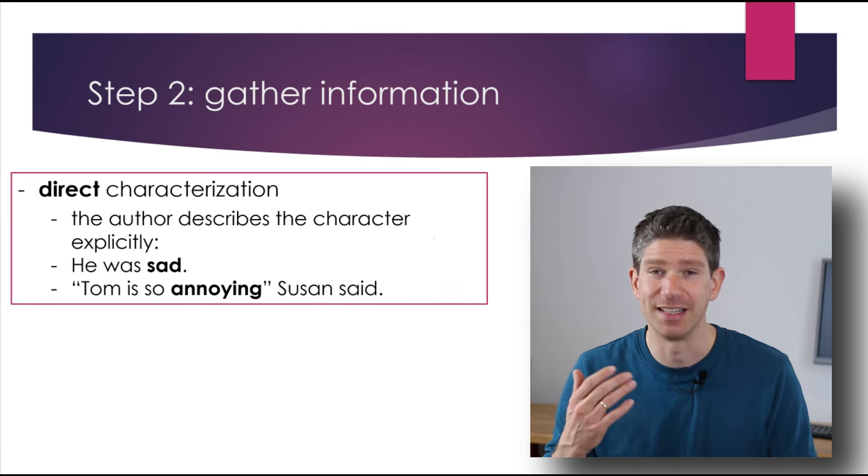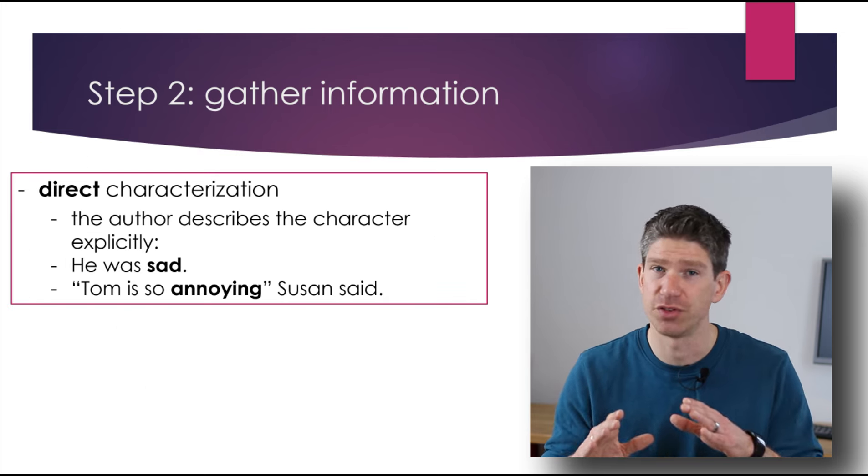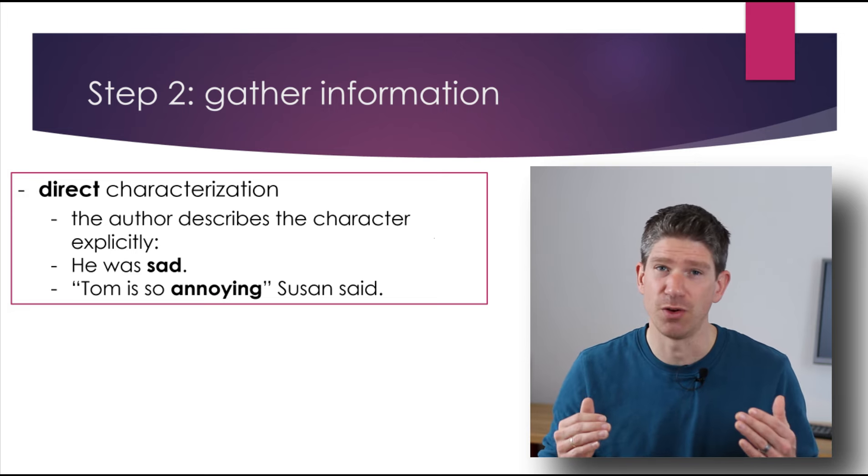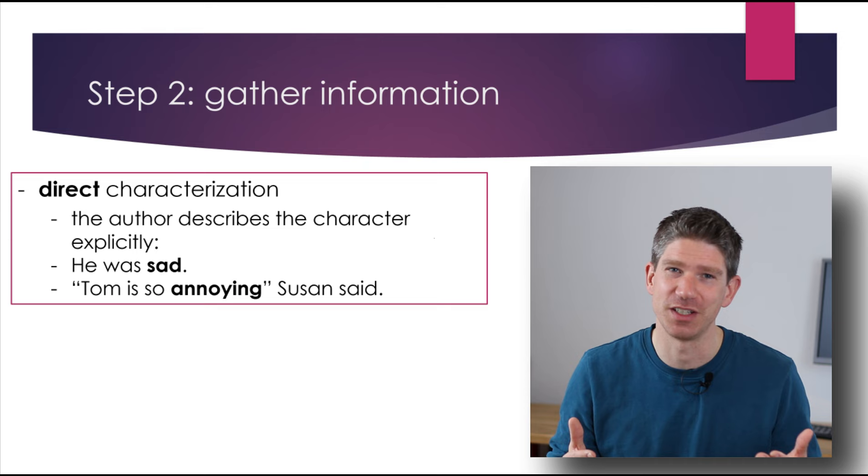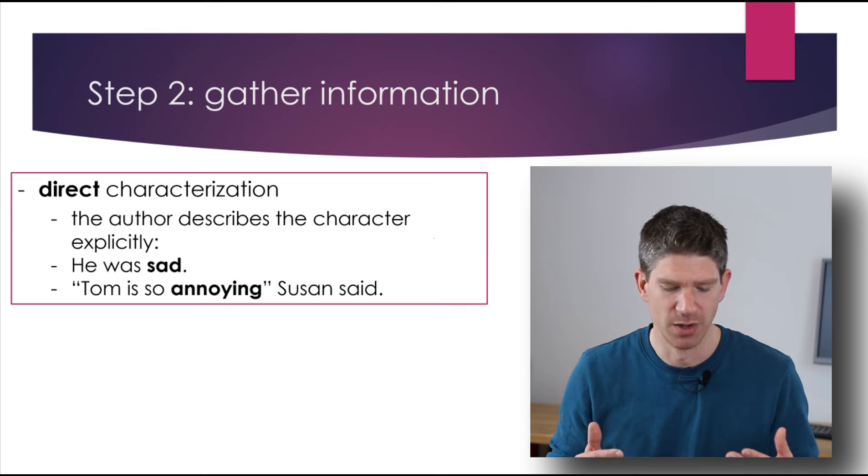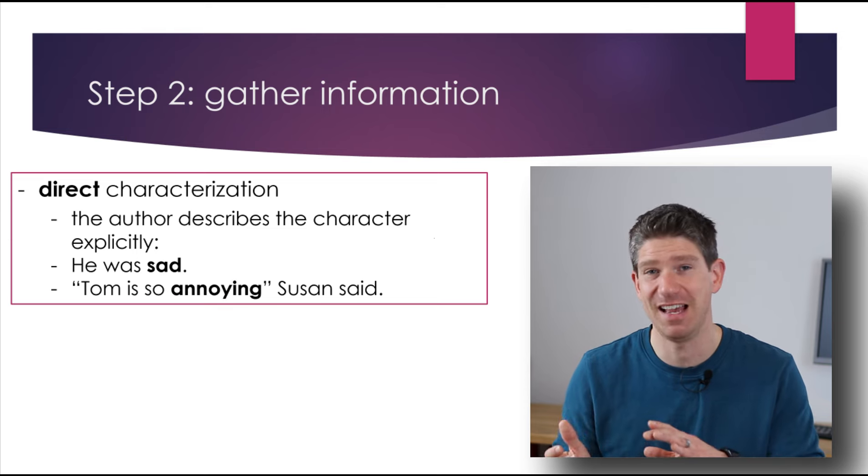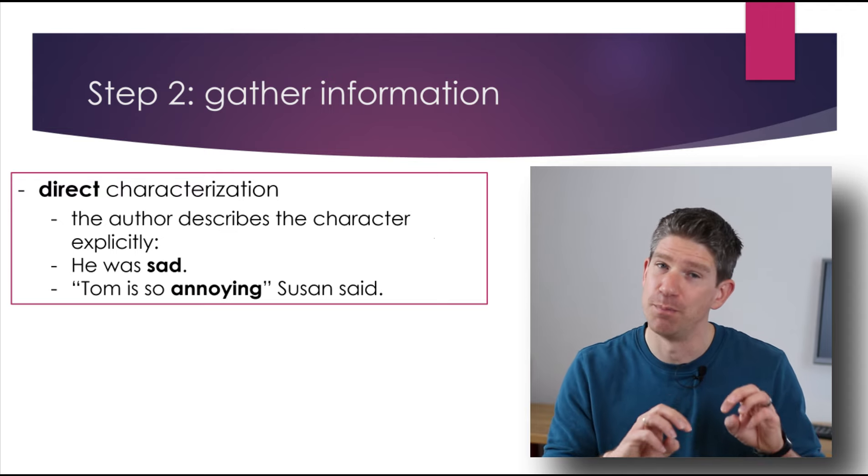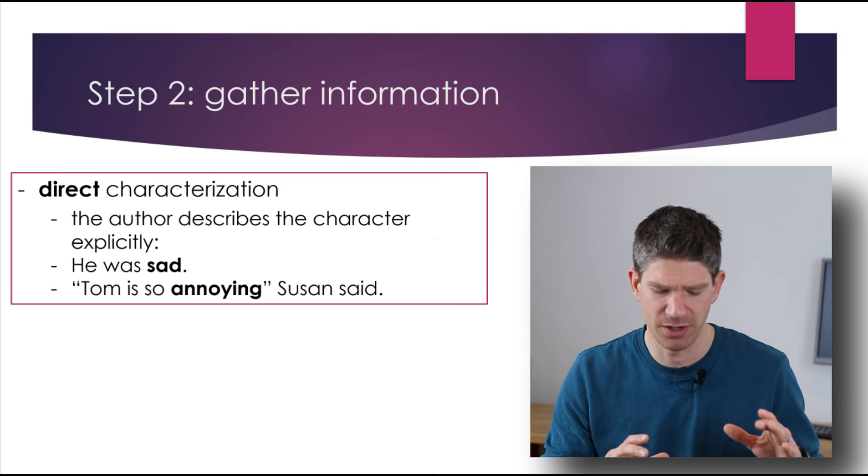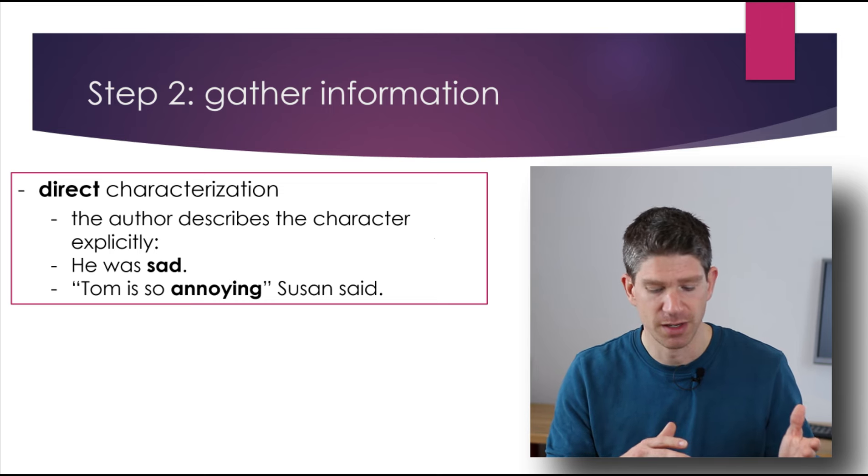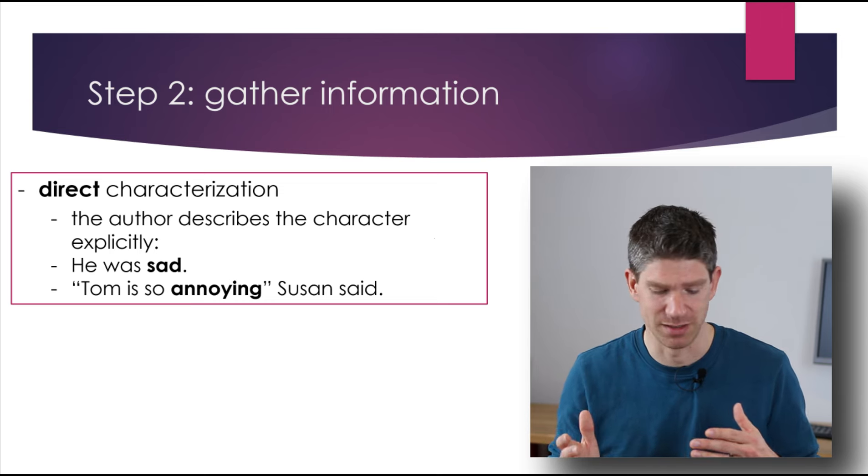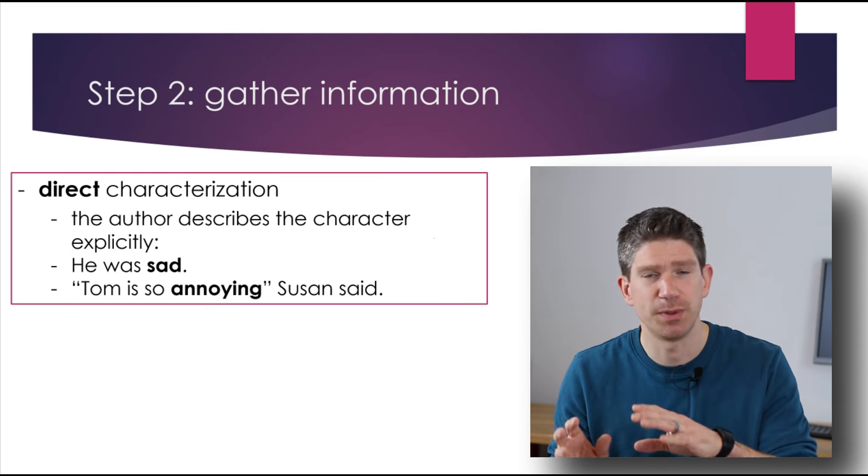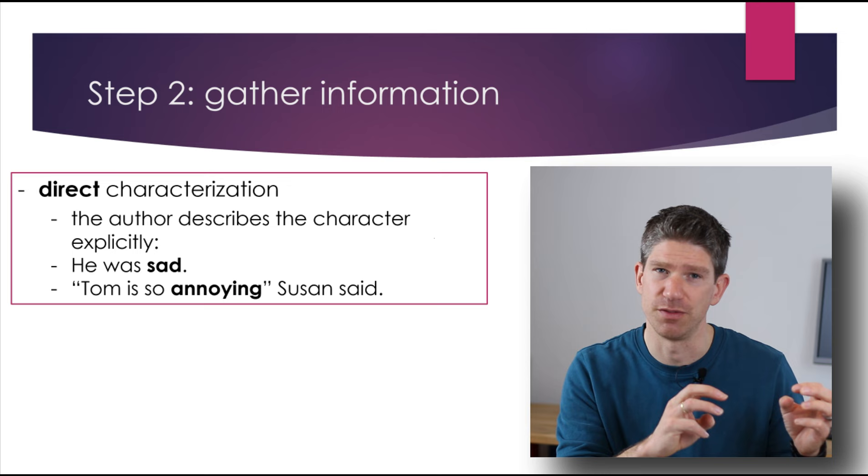You should also think about direct characterization versus indirect. And I'll go into that later on. Direct characterization means the author gives you adjectives about the character directly. So we have a sentence like, he was sad. So we know he is sad, unhappy, depressed, or whatever. But we know this is something about his character. And here this is given by the narrator. It could also be another character saying this. Tom is so annoying, Susan said. Tom might not be annoying, it might be Susan's perspective, but we've got this adjective that we can work with.